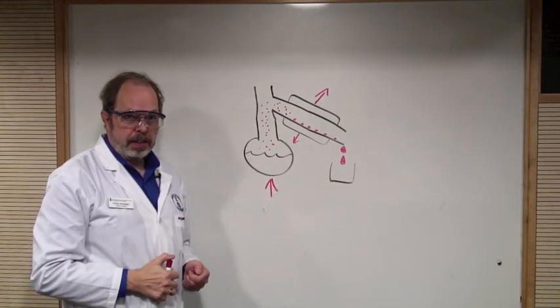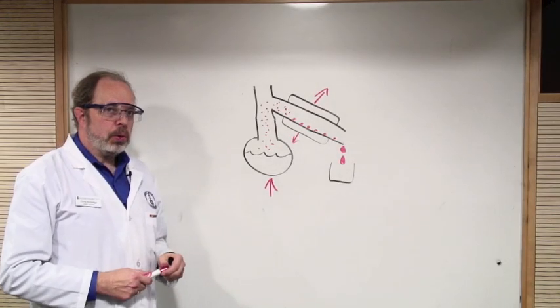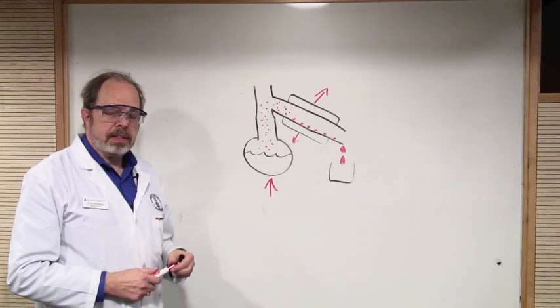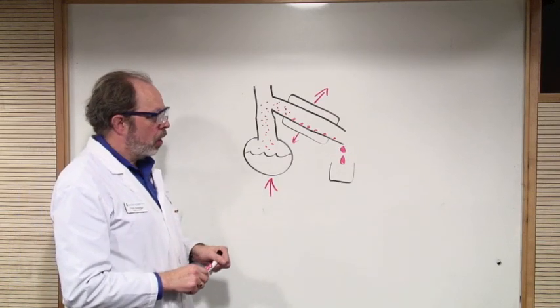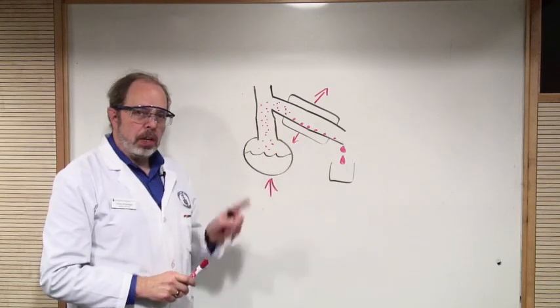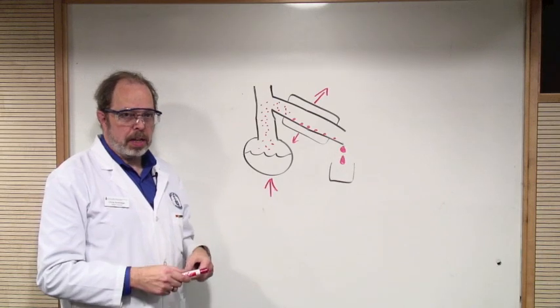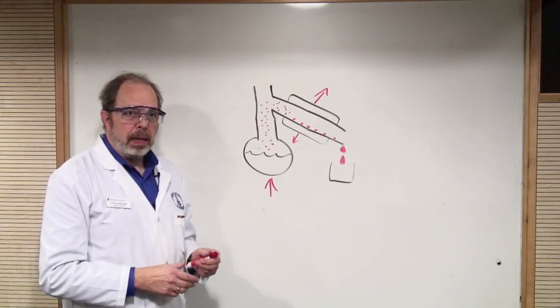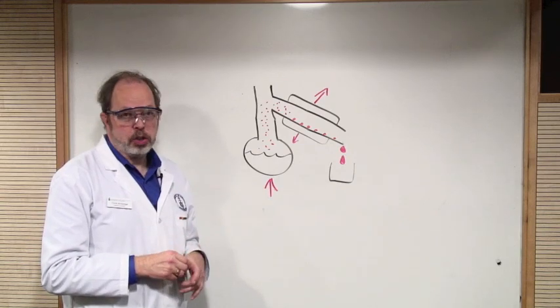You can't actually use this particular setup directly when you're working in the microscale. That's because there's an awful lot of volume associated with the vapor phase in this setup, and so the microscale apparatus will be on a vertical axis, and the vapor path is considerably smaller.